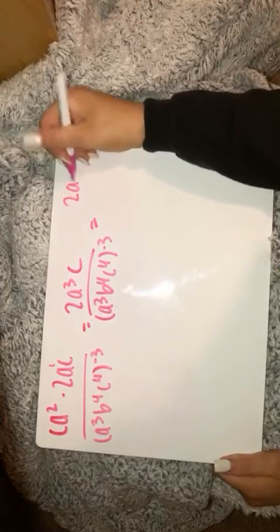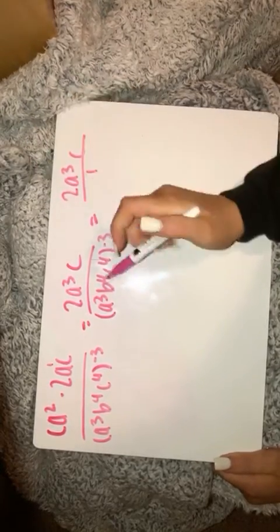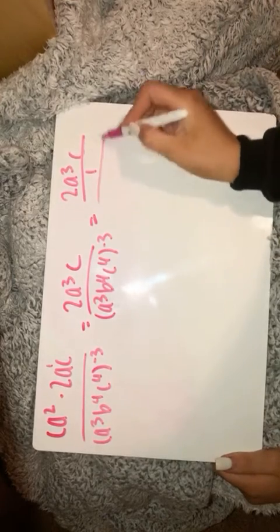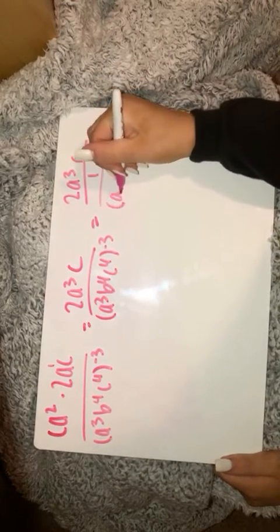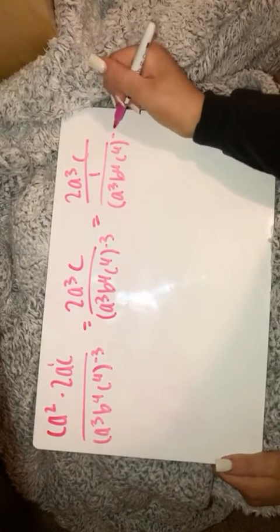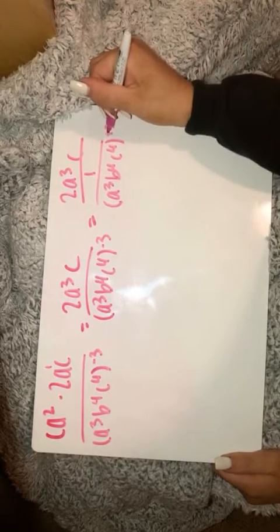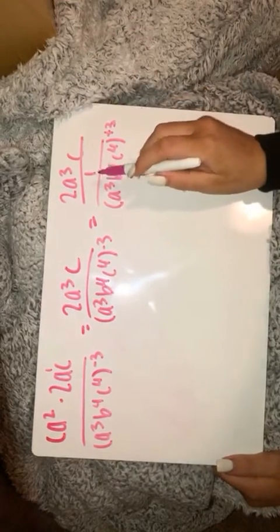So you're going to end up with something that looks like this. So you're going to want a 1 on top of that, which means there's a 1 below here. And so now actually this can turn into a positive 3 because it has a 1 on top of it.